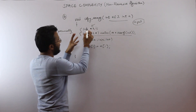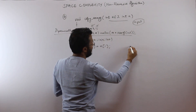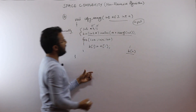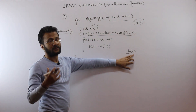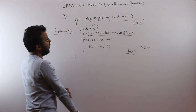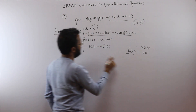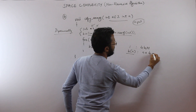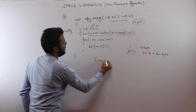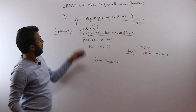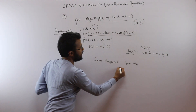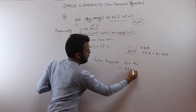We have two variables: 'i' and 'b'. The size of 'b' is decided by malloc — it is n number of elements. We are creating an array 'b' with n integer elements. Variable 'i' takes 4 bytes, and array 'b' takes n × 4 = 4n bytes. The total space required for this function is 4 bytes for 'i' plus 4n bytes for 'b', which comes to 4(n+1) bytes.